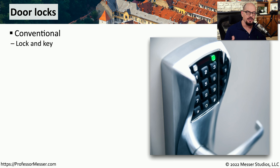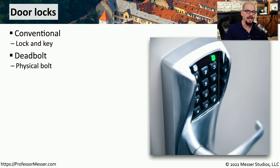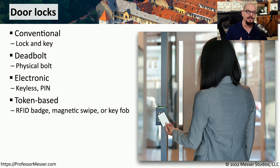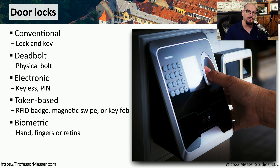All of us are familiar with door locks, but there are many different ways to lock a door. If you have a door lock at home, it's probably a conventional lock with a key that you insert to lock and unlock the door. Or you may have a deadbolt that slides a piece of metal between the door and the door frame to prevent anyone from opening it. These could also be electronic locks where you put in a personal identification number, or keyless where you use a badge to gain access. This can also be combined with biometrics — such as a fingerprint, a handprint, or a retina scan — to ensure that you're the one carrying the card or using the PIN.